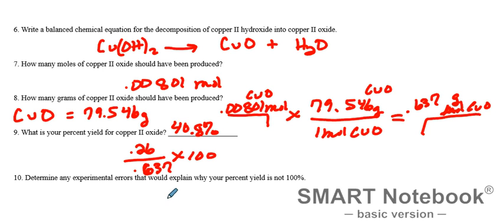For experimental errors to explain why we're not 100%: we probably have some crystals left on our filter paper. We lost crystals initially of the copper hydroxide from before, and maybe some crystals fell on the table when transferring them over. Those are all reasons for experimental errors.